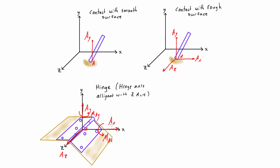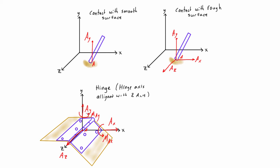Keep in mind that if the hinge axis were lined up with the y-axis instead, we would lose May and gain Maz. So don't assume we never get a moment about the z-axis — it depends entirely on which axis the hinge is aligned with. The problem could be oriented with the hinge axis along any one of the three coordinate axes.